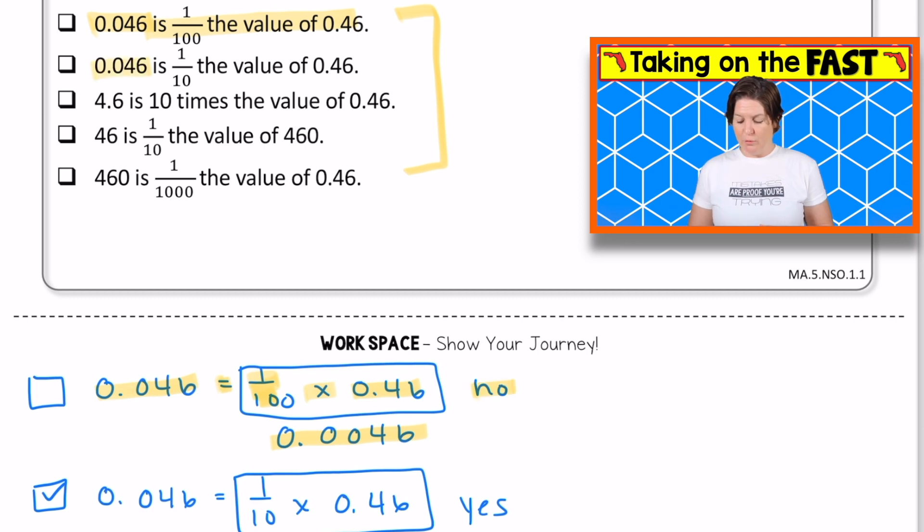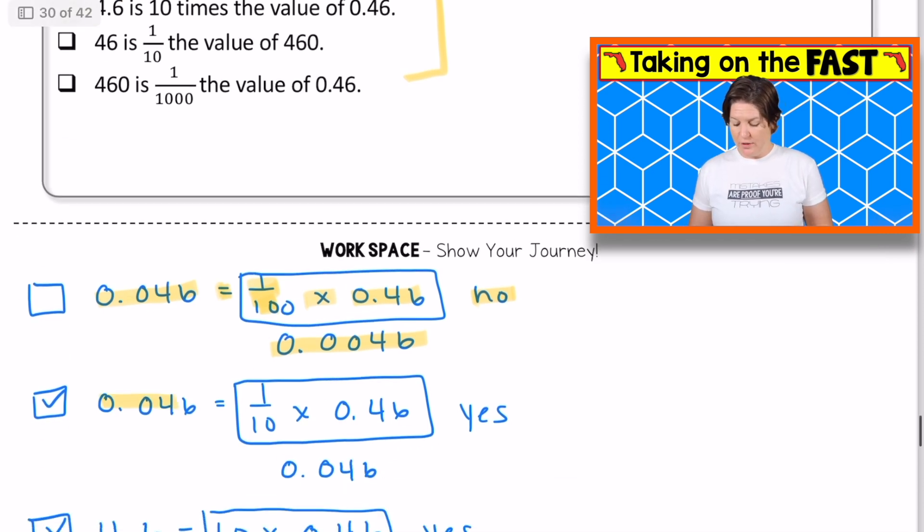And the second one, we've got 0.046 is one 10th of the value of 0.46. 0.046 on this side is one 10th of 0.46. That would be bumping each digit back one place to get 0.046. So yes, that is a correct answer.